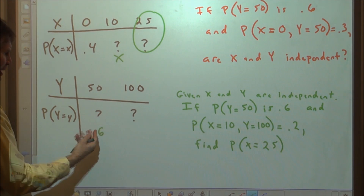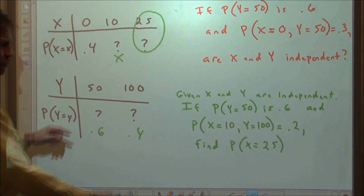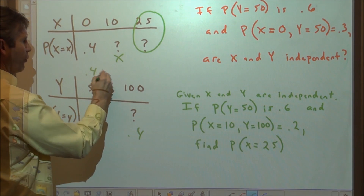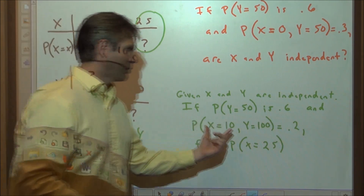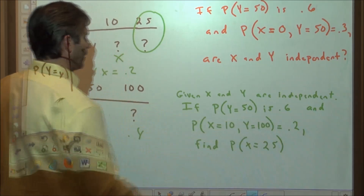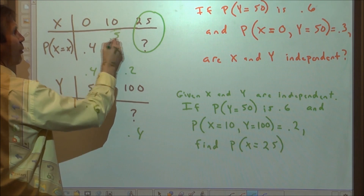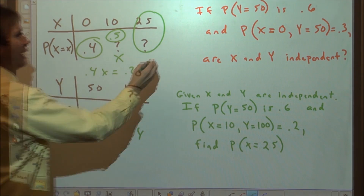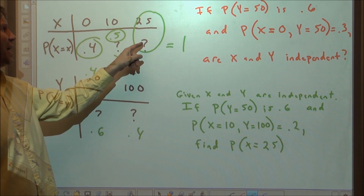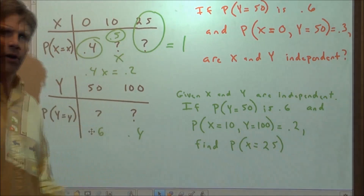We know P(Y=50) = 0.6, so P(Y=100) must be 0.4 since all probabilities in a distribution sum to 1. Setting up: 0.4 × P(X=10) = 0.2, solving gives P(X=10) = 0.5. Now that we know P(X=10) = 0.5 and P(X=0) = 0.4, the remaining probability P(X=25) must be 0.1. These are the most common tasks when dealing with discrete random variables and their joint distributions.